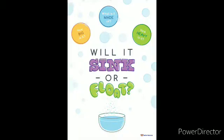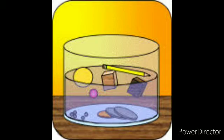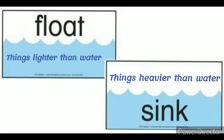You must have noticed that certain things float in water while others sink. Let me show you with the help of an experiment. Take a big bowl and fill it with water. Now put in a pencil, three coins, a ball, a wooden block, and small pieces of stone. What do you see? The pencil, ball, and blocks of wood float, while the coins and stones sink in water. This is because things that are lighter than water float, and things that are heavier than water sink.